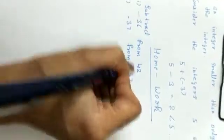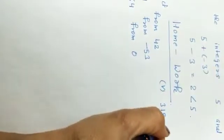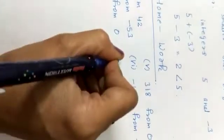Please note down your homework. You have to do all remaining parts from question number 1: subtract -36 from 42; subtract -37 from -53; subtract -64 from 0; subtract -153 from -240. Do all these sums neatly in your notebook.